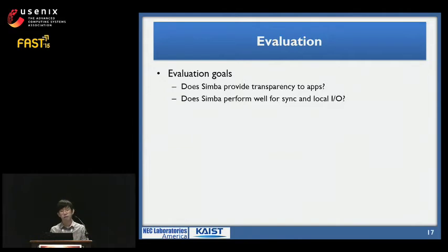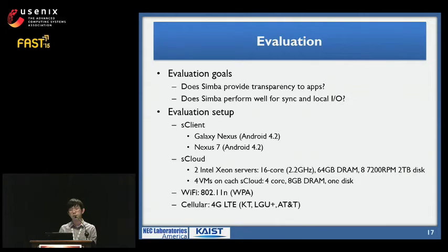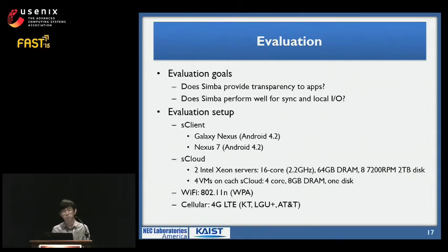Now let's evaluate how Simba performs in practice. We aim to evaluate two things: does Simba provide transparency to apps, and does Simba perform well for sync and local IO? We used either a Galaxy Nexus or Nexus 7 phones running Android 4.2 as the Simba client, and Simba Cloud running on eight VMs across two Intel servers, each with dual 8-core CPUs and 64 GB of DRAM. Networks used were Wi-Fi and 4G LTE.